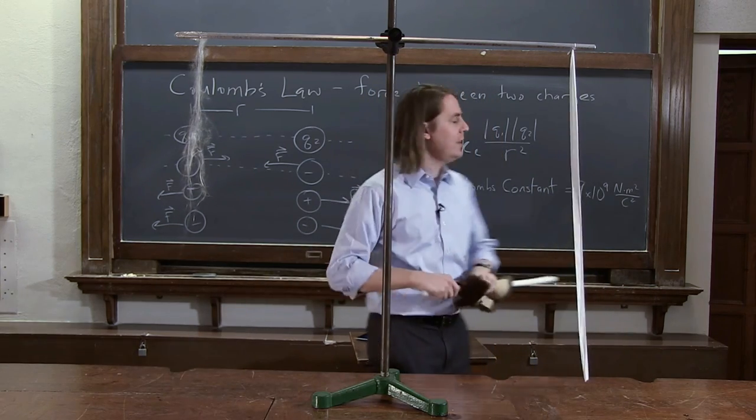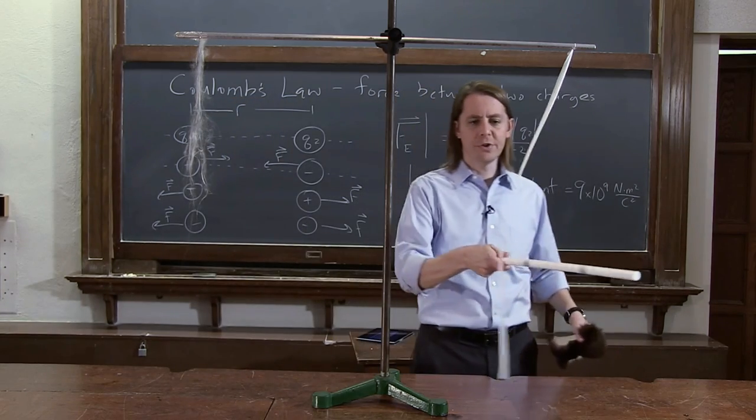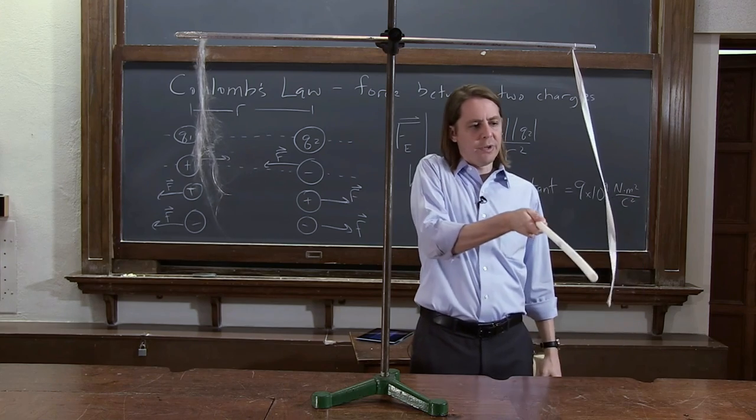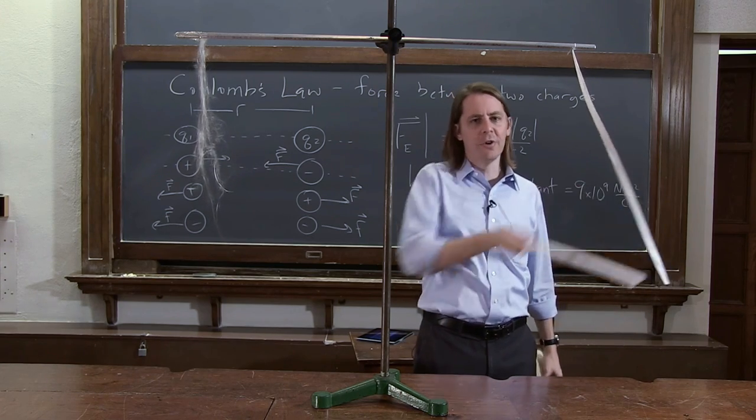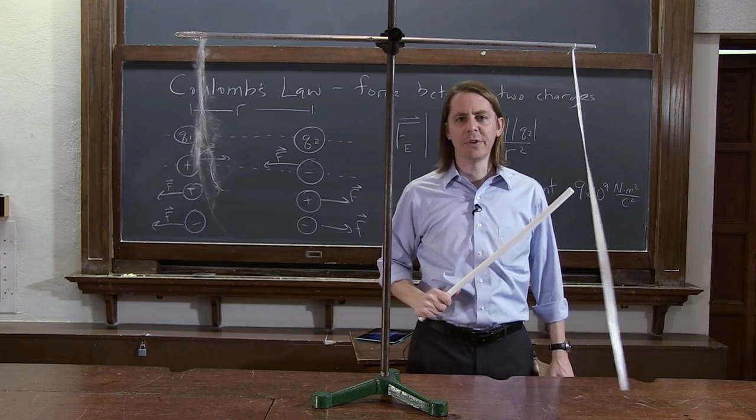And what we should see—they're both negative, so it should be repulsive. So we can make sure that we get the right answer. And sure enough, highly repulsive. Sticks to the metal. There it goes. Can't even get them to touch, no matter how hard I try. Repulsive force between the two negative objects.